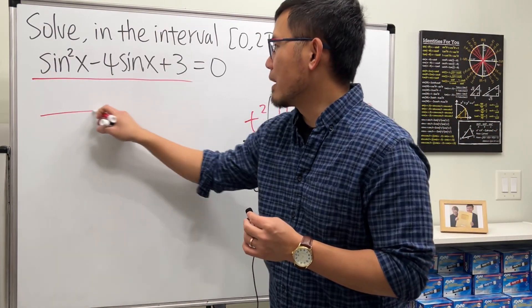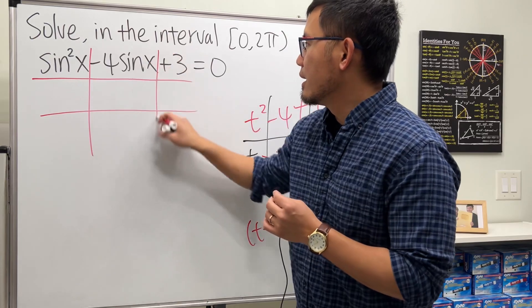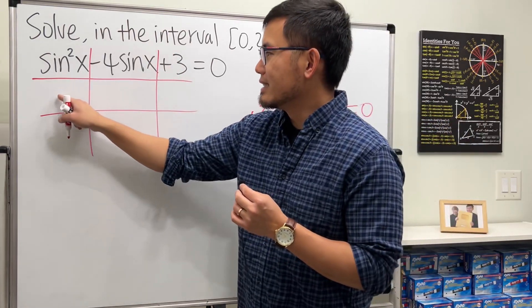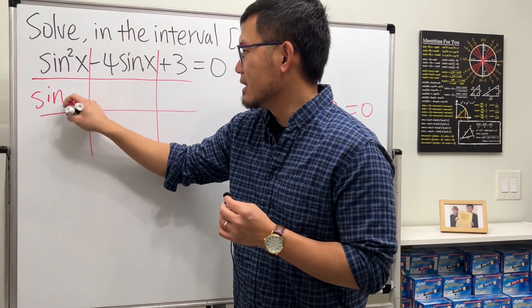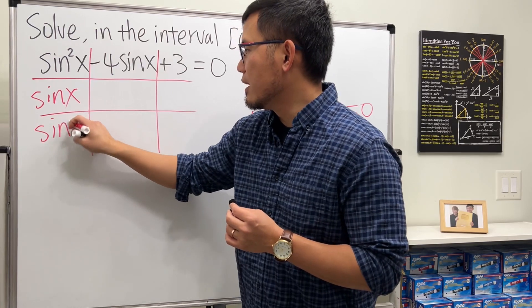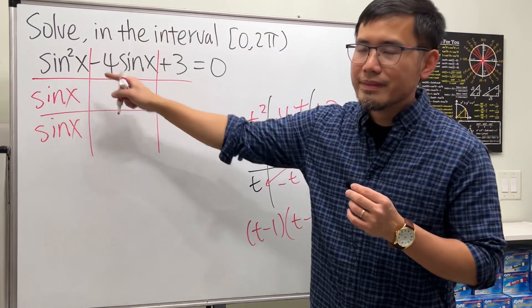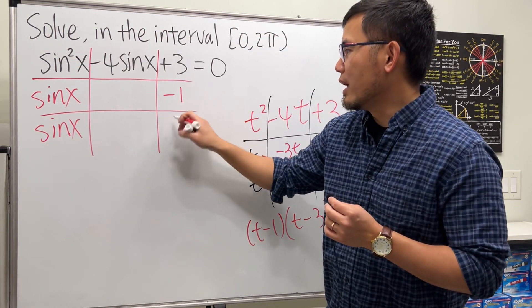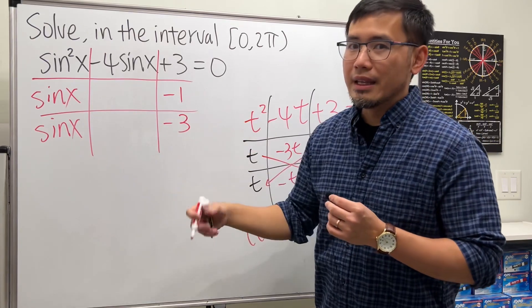Go ahead and draw the tic-tac-toe boxes right away. And we just have to do sine and sine, because sine x times sine x will give us sine x squared. And right here let's use minus 1 and minus 3.